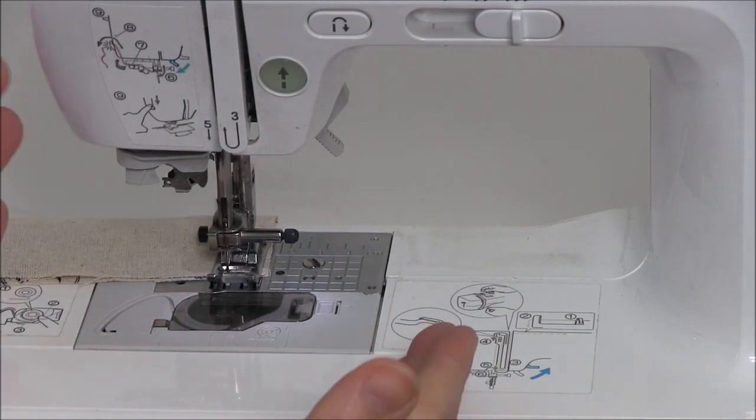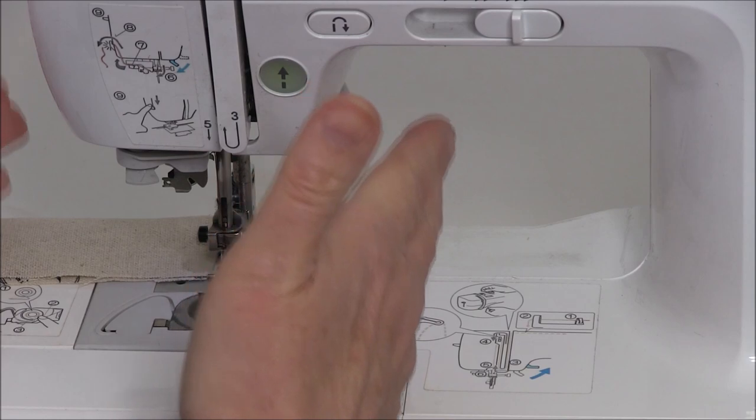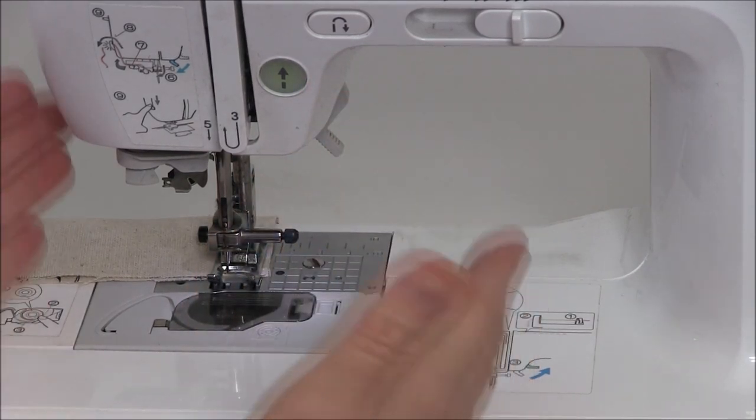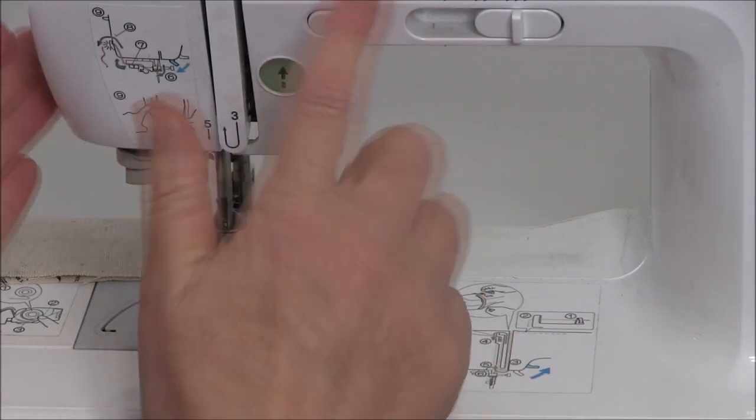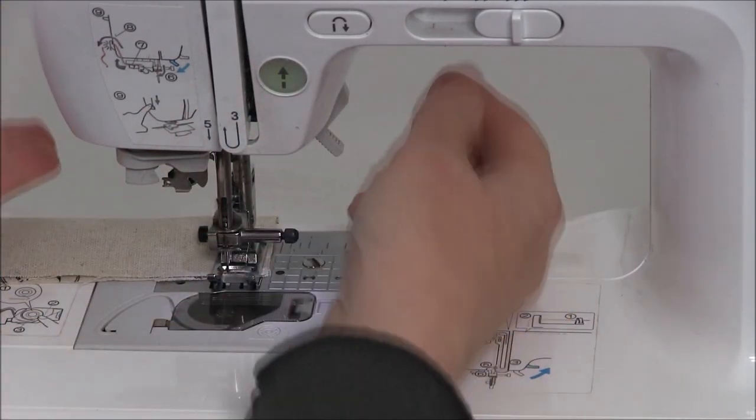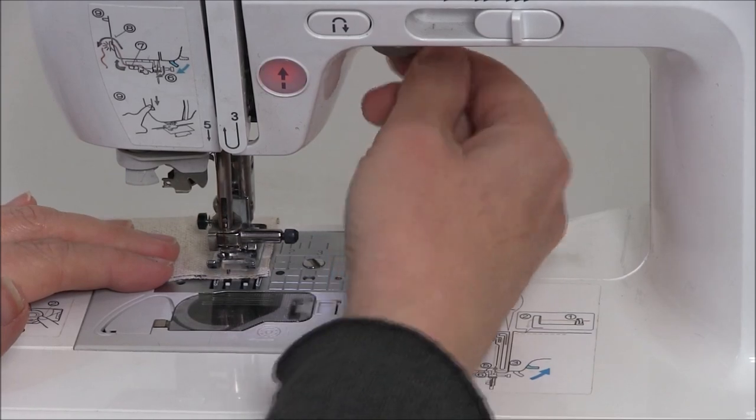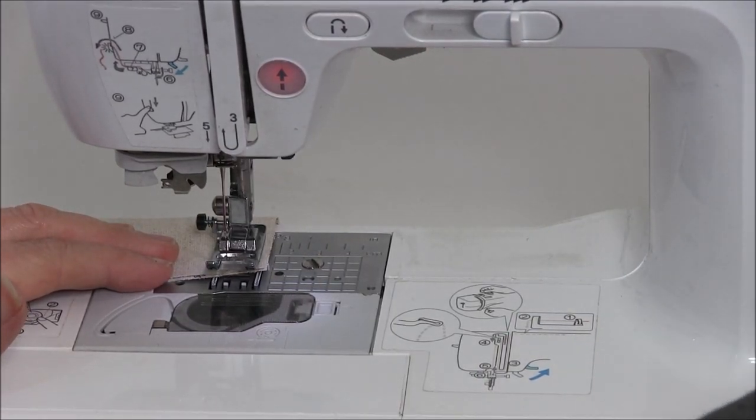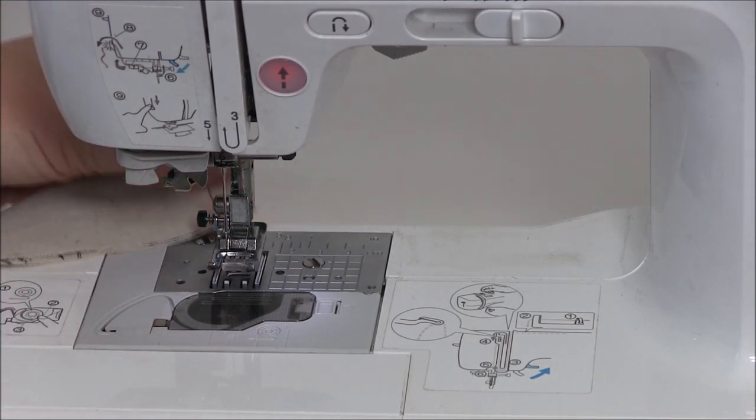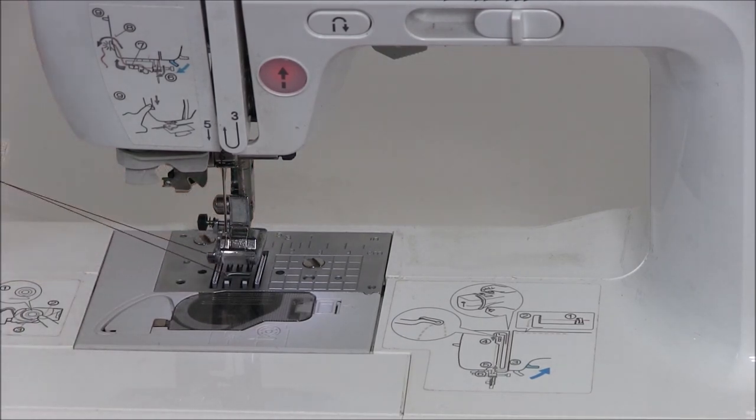When we sew a seam we always back tack at the beginning and end to secure it. When you're finished, my machine has an automatic cutter which is great, but lift your presser foot up, make sure your needle is at the highest, and then you can pull your fabric away.